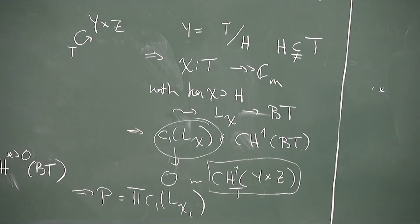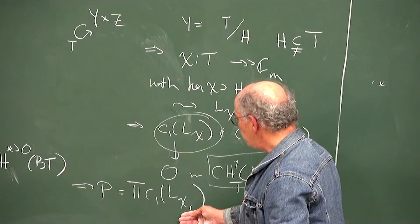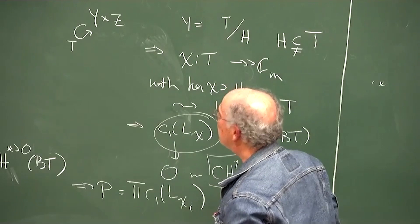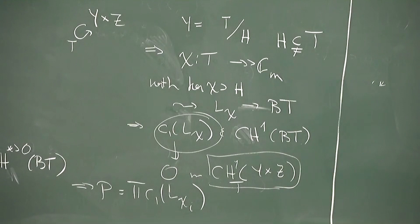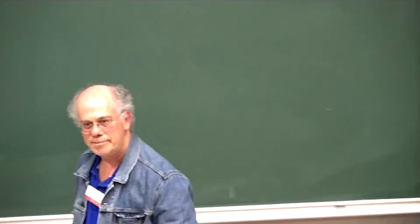You take a character chi of T, non-trivial, with kernel containing H. That gives an associated line bundle on BT, and the condition that its kernel contains H means when you pull it back to Y, the line bundle becomes trivial. So c_1(L_chi) in Chow^1(BT) pulls back to 0. Inverting this kills all the equivariant Chow groups of Y × Z, and there are only finitely many such orbit types, so the product of these c_1(L_chi) is the P you invert.